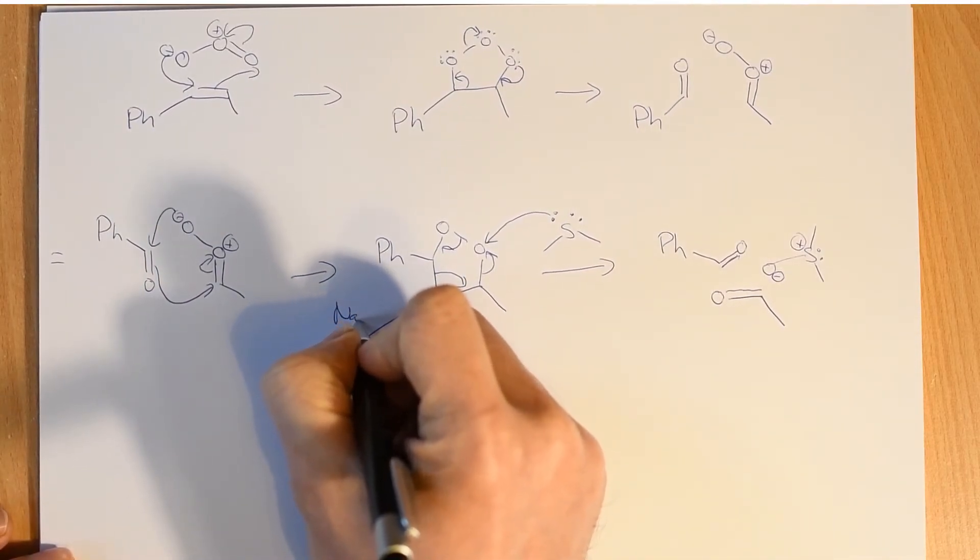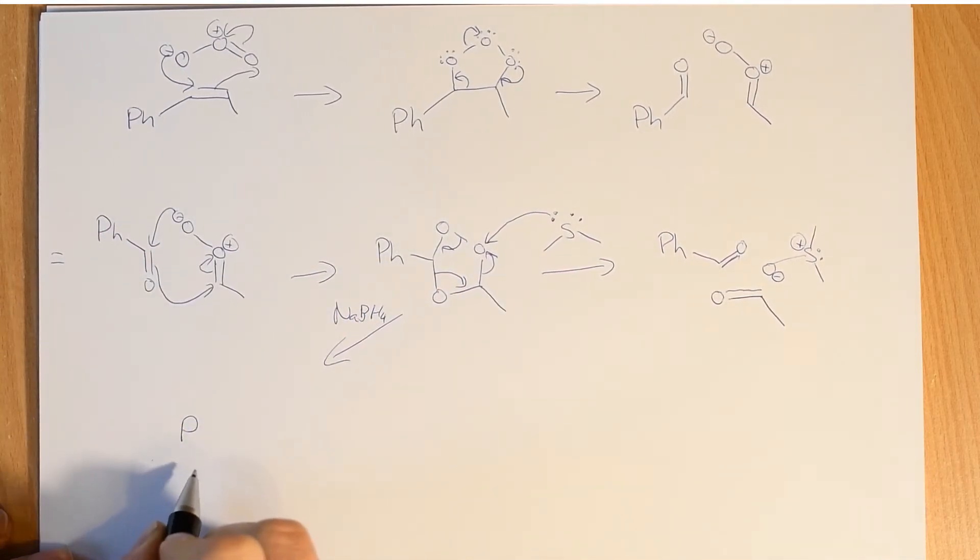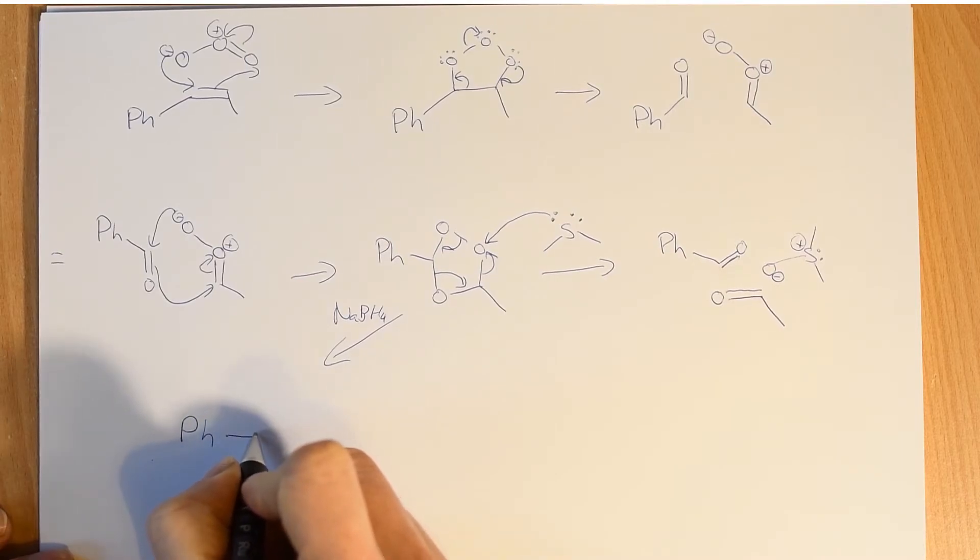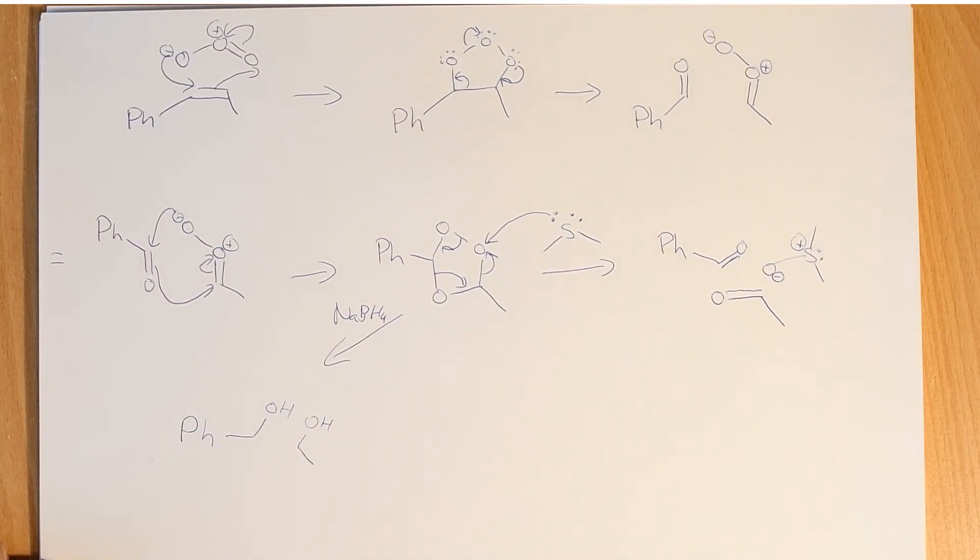If you treat it with something like sodium borohydride, then what we will end up getting is benzyl alcohol and ethanol. So we'd end up with the two corresponding alcohols.